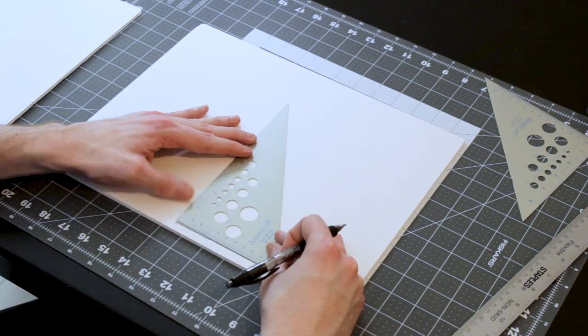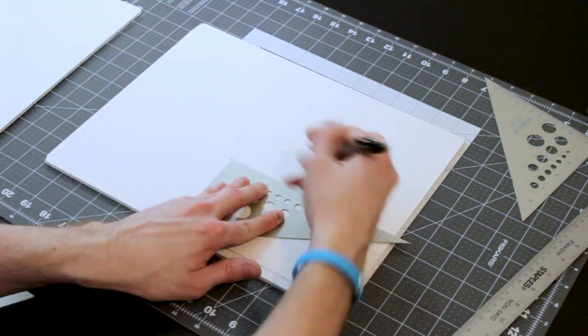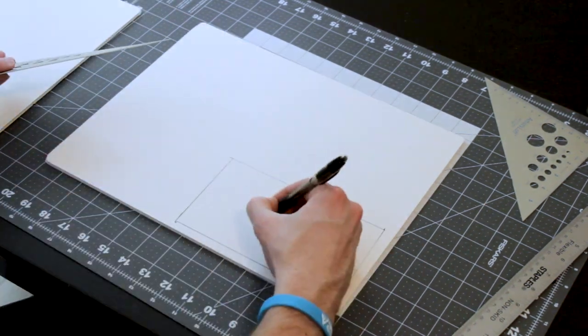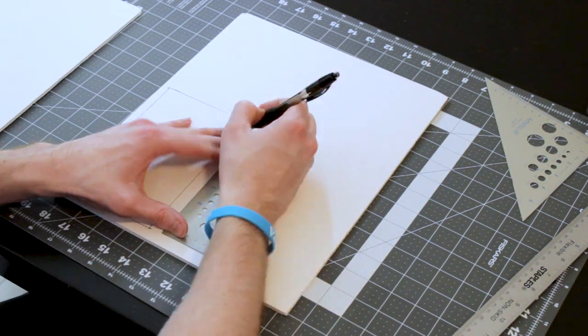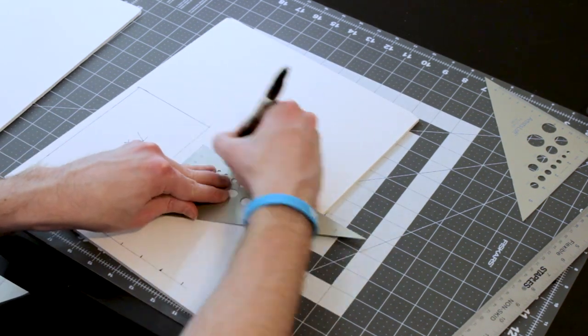So we're starting with foam core. We're going to take our metal triangle and start squaring out these pieces. That's the top there - it's a 7 by 4 inch platform. And then we're going to do four 1 inch by 6 inch rectangles for the pillar.